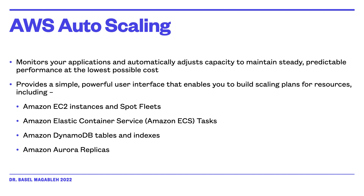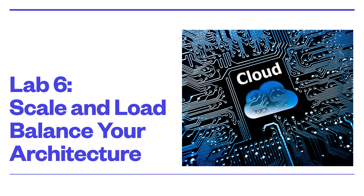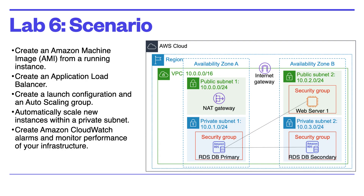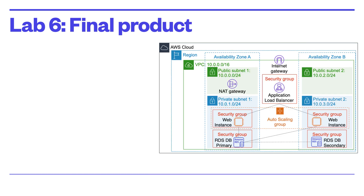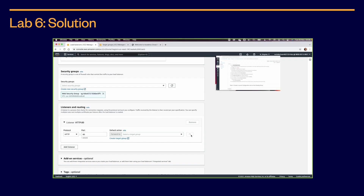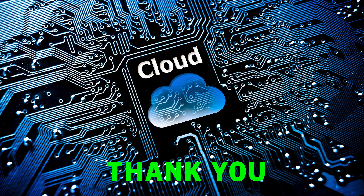In lab 6, you will create an Amazon Machine Image from a running instance, create an application load balancer, create a launch configuration and auto scaling group, automatically scale instances within a private subnet, and create an Amazon CloudWatch alarm to monitor the performance of your architecture. The final diagram of this lab is shown in this slide, and you can also look at the full solution demo. Thank you for watching this video and see you in the next one.